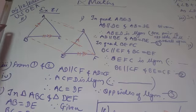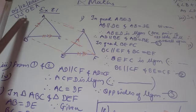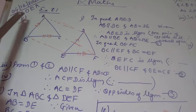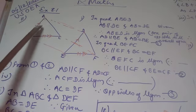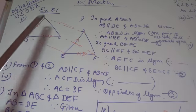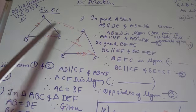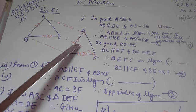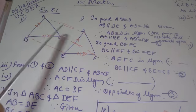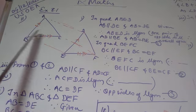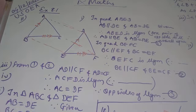Today we have started from Exercise 8.1, question 11. In this question, it is given that AB is parallel to DE and AB is equal to DE. Also, it is given that BC is parallel to EF and BC is equal to EF.